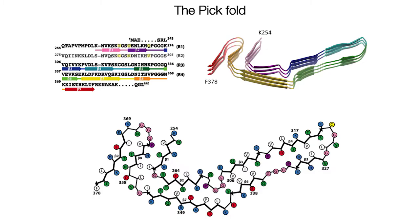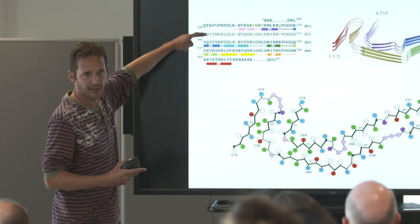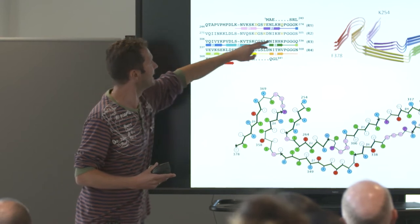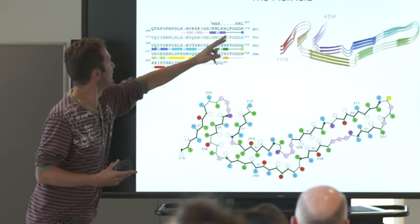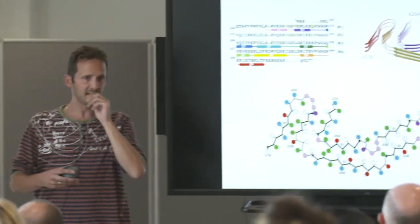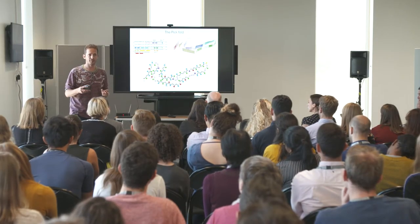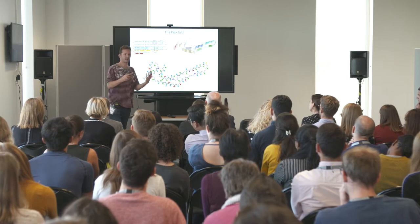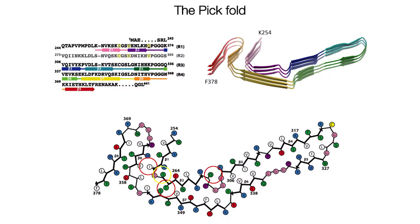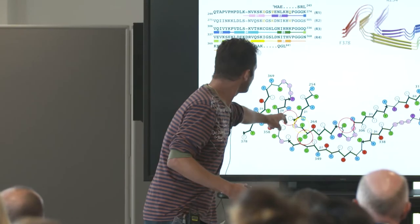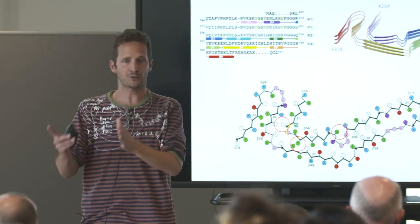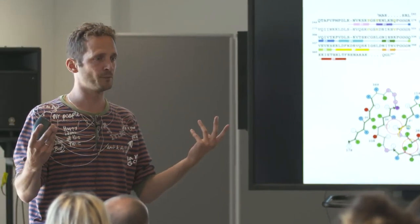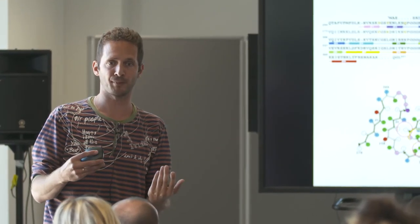The Pick's disease model involves three-repeat tau only, so the second microtubule binding repeat is absent. The structure extends beyond the third repeat all the way into the first repeat. This explains why in Pick's disease you only have three-repeat isoforms: four-repeat isoforms cannot incorporate into these filaments because residues from the first repeat differ from those in the second repeat, and some residues would be too big — they would bump into each other, leaving no space for a four-repeat tau isoform.